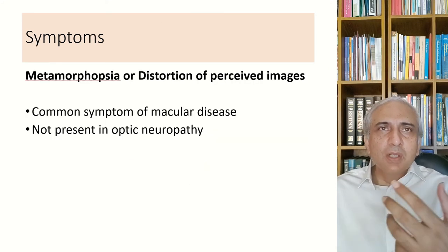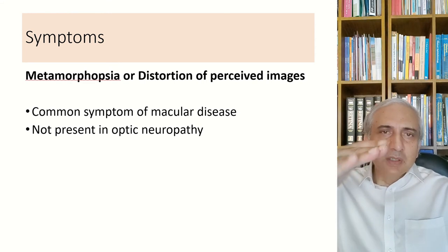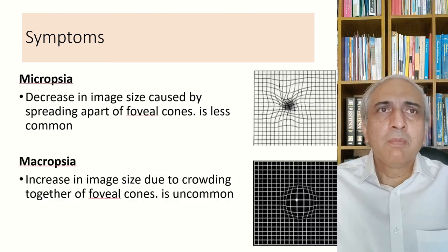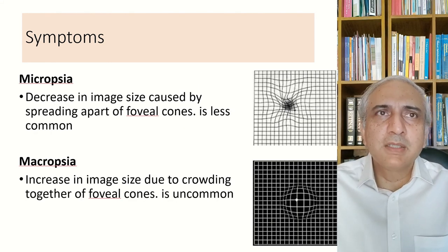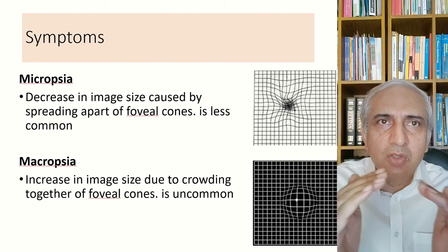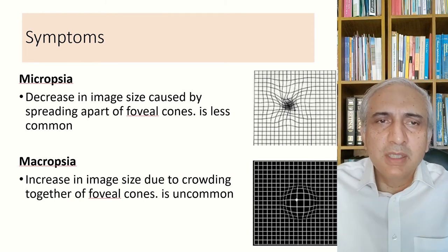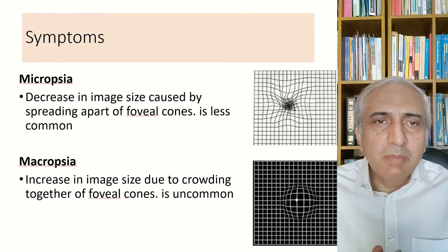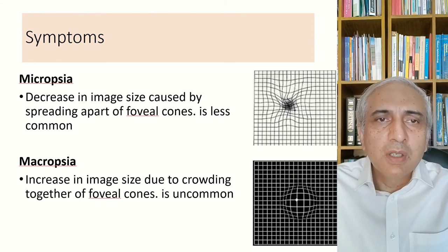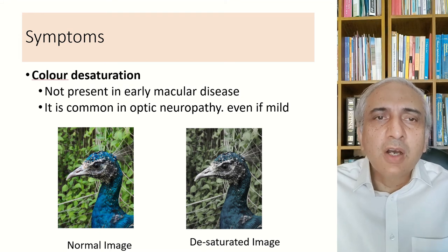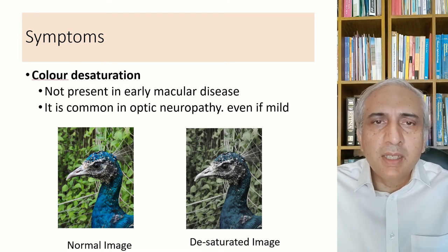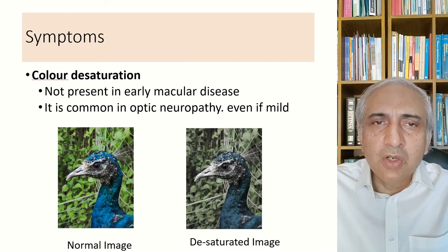Other features of macular disease include metamorphopsia, or distortion of perceived images, causing wavy appearance. Micropsia is decreased image size caused by spreading apart of foveal cones, while macropsia is increased image size due to crowding together of foveal cones. Patients suspected of macular disease should be asked about distortion of lines or objects. Color desaturation is a feature of optic nerve disease, not macular disease.